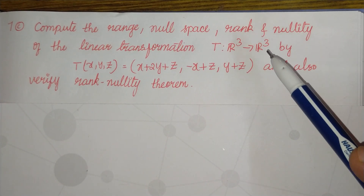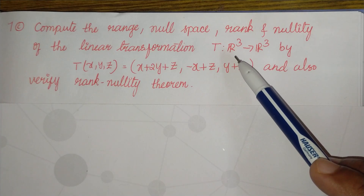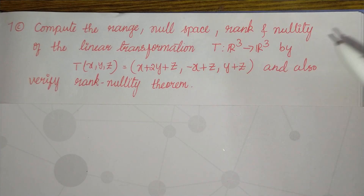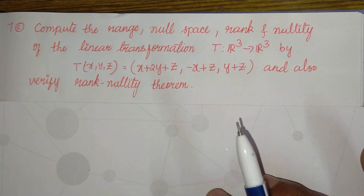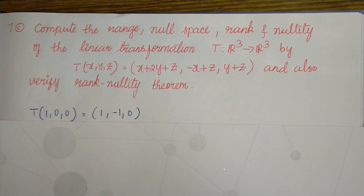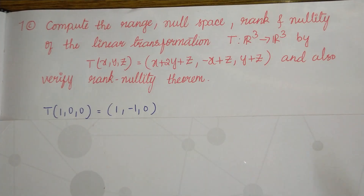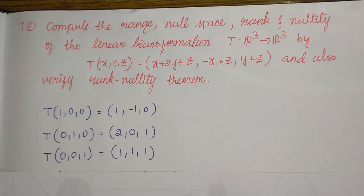Observe that no information is given about the basis of the domain or co-domain, so we consider the standard basis of R³, which is {(1,0,0), (0,1,0), (0,0,1)}. The first step is to calculate T(1,0,0). We know T(x,y,z), so let us substitute x=1, y=0, z=0. We also calculate T(0,1,0) and T(0,0,1).